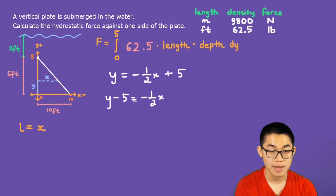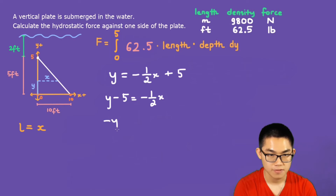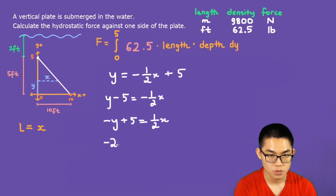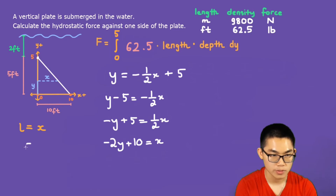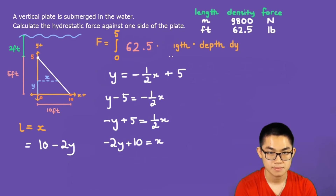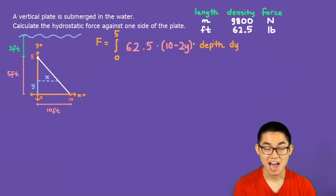Solving for x: y minus 5 equals negative one-half x. Multiplying both sides by negative 1 gives negative y plus 5 equals one-half x. Multiplying both sides by 2 gives x equals negative 2y plus 10. So the length L equals 10 minus 2y.